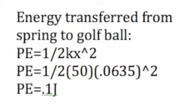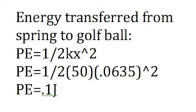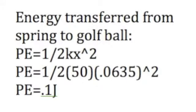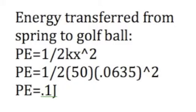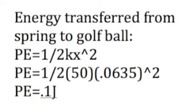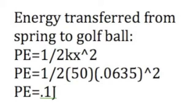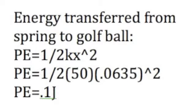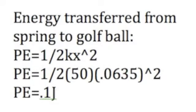Now, in order to find the energy transferred from the spring to the golf ball, we use the equation potential energy equals one-half times the spring's constant times the distance the spring was either shrunk or stretched, to the power of two. In this case, potential energy turns into kinetic energy when the spring is fully released onto the golf ball. My calculations were PE = 1/2 times the estimated constant of the spring, 50, multiplied by 0.0635 meters that the spring was shrunk, to the power of two, and I got that the potential energy was 0.1 joules.